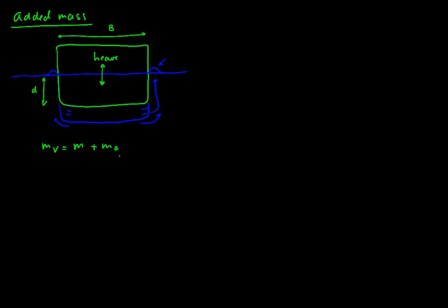Well, you could say that the added mass is something like the actual mass times B divided by 2 times the draught. So that's the idea.